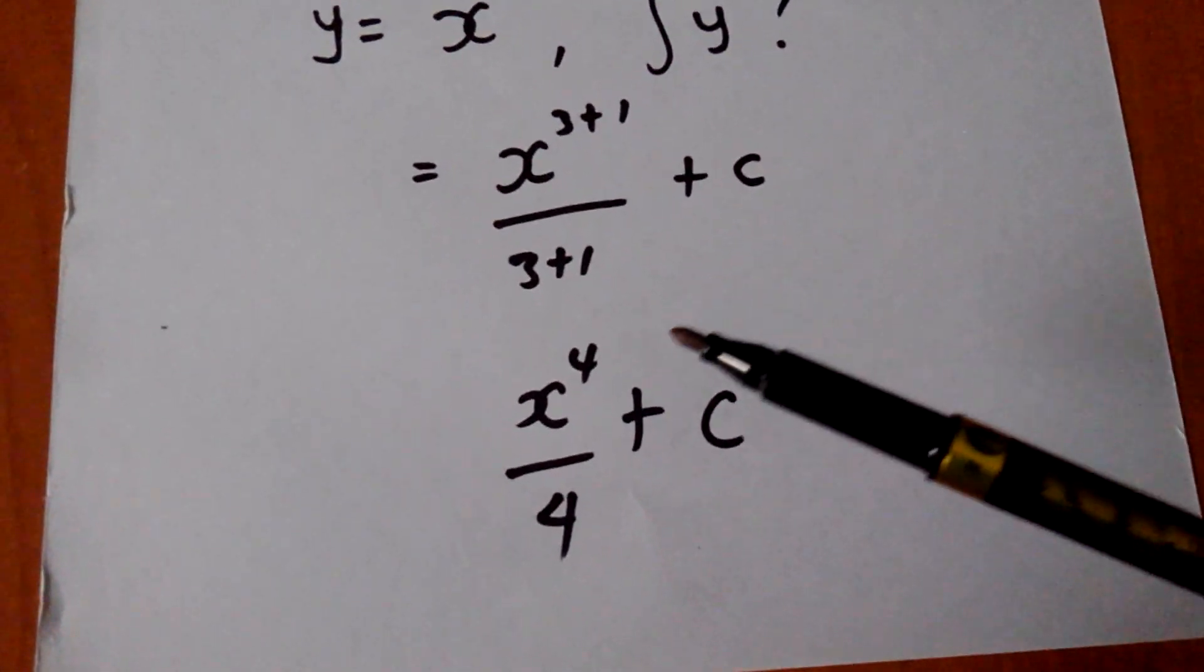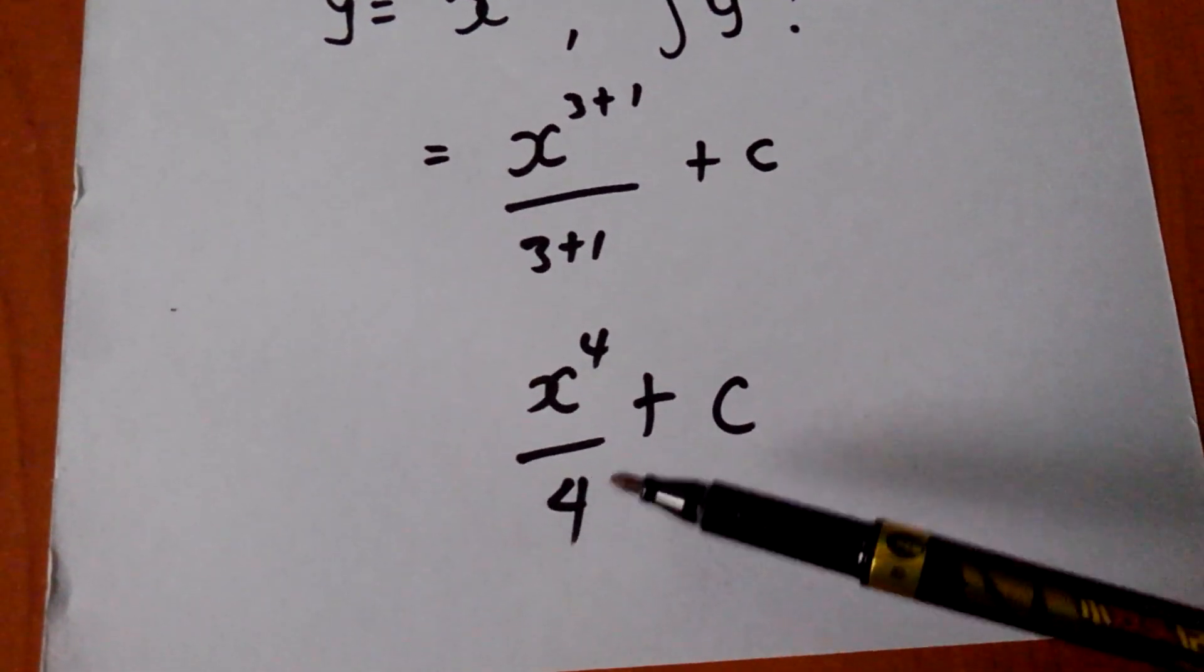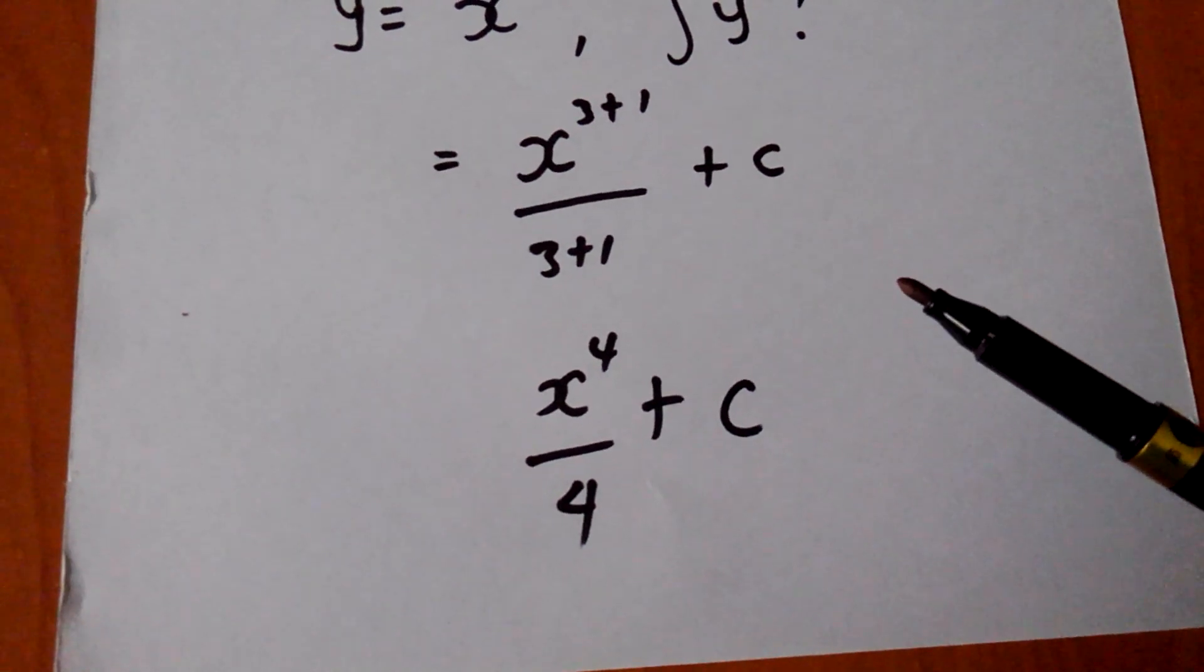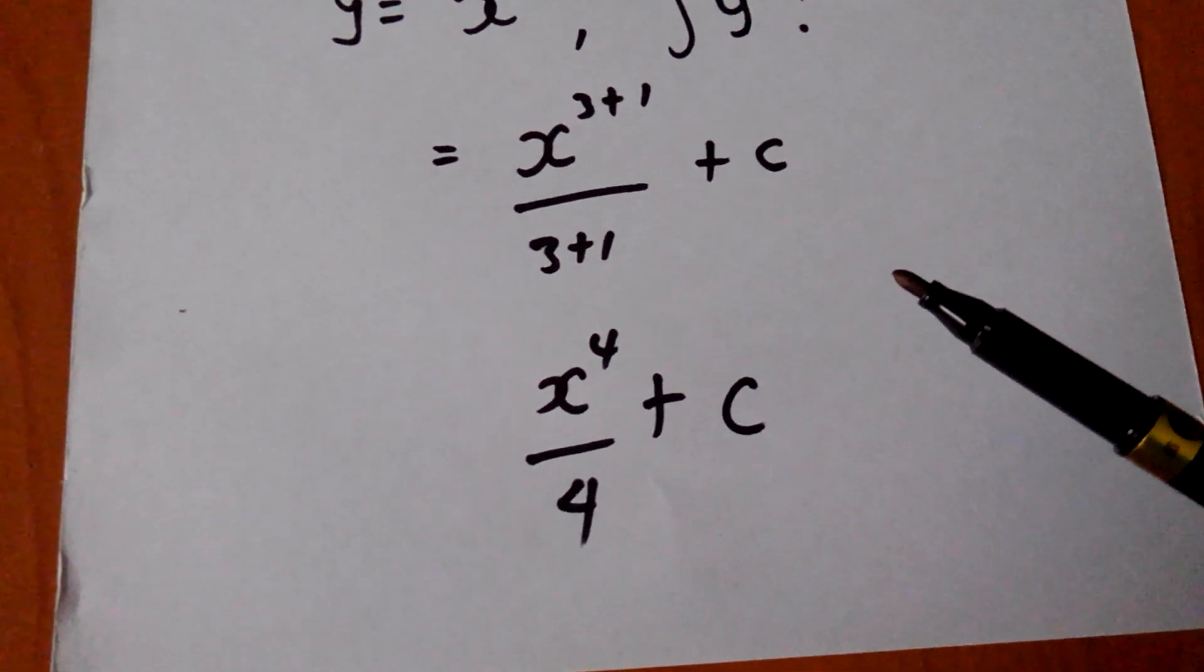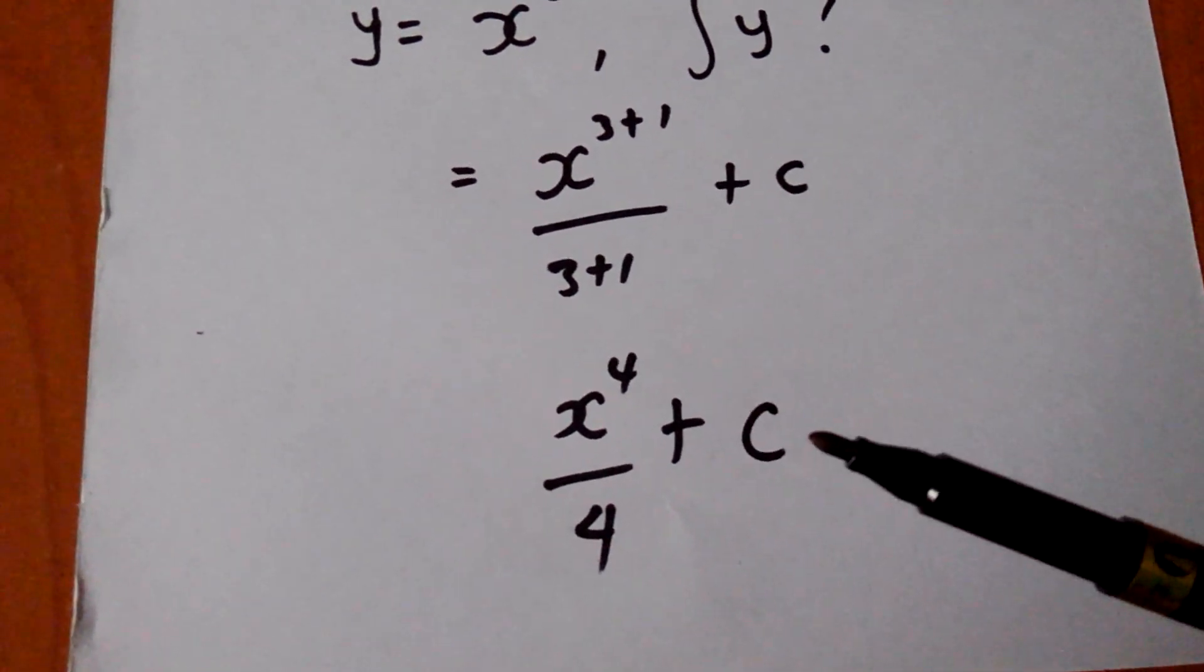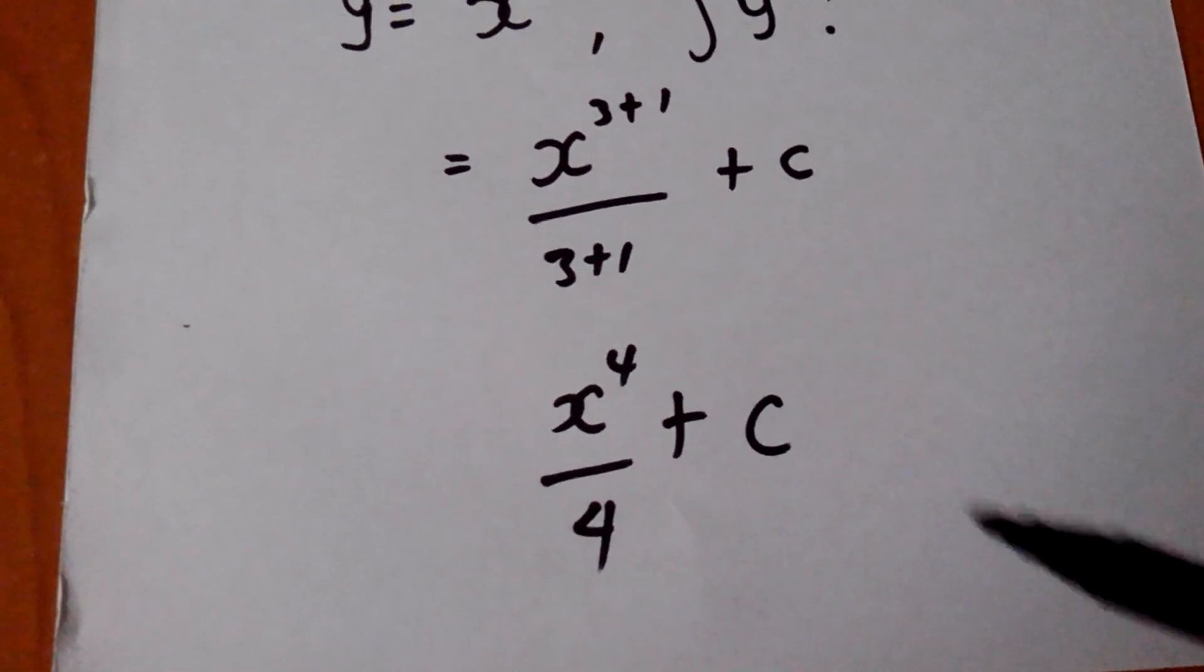So the new answer I will have will be x to the power 4 over 4 plus c, which is a constant. Basically, that c is universal. That's what we use. We can't use y or z. That's how I found it to be.